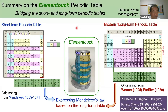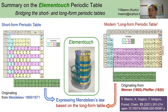To summarize the first part: the Element Touch periodic table bridges the short and long form periodic tables. It is based on the modern long form periodic table and yet recovers and expresses Mendeleev's periodic law. That's my periodic table.